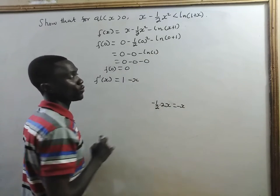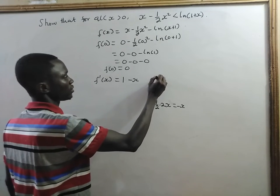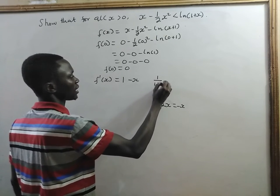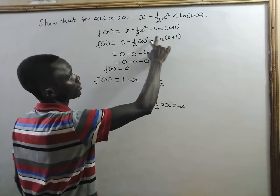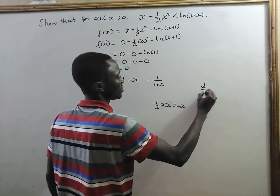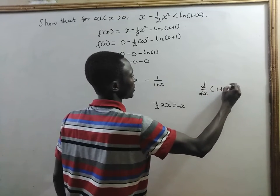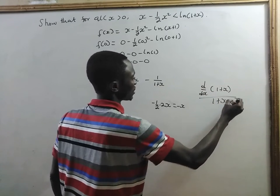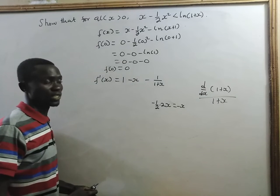If you differentiate natural log of 1 plus x, you get 1 divided by 1 plus x. So, we put a minus sign there. That is, the derivative of this is the same as d/dx of 1 plus x divided by 1 plus x. Check the description for the video on how to differentiate natural log of logarithmic functions.